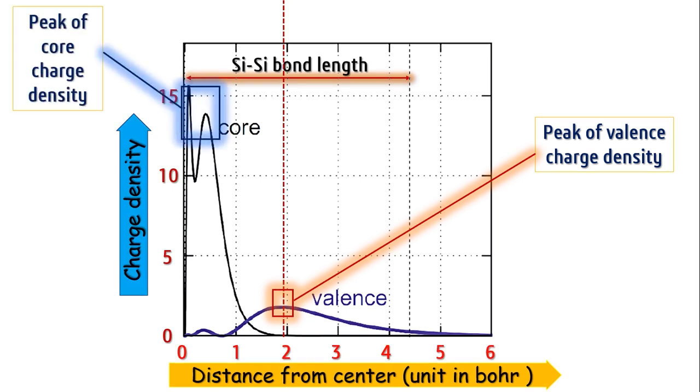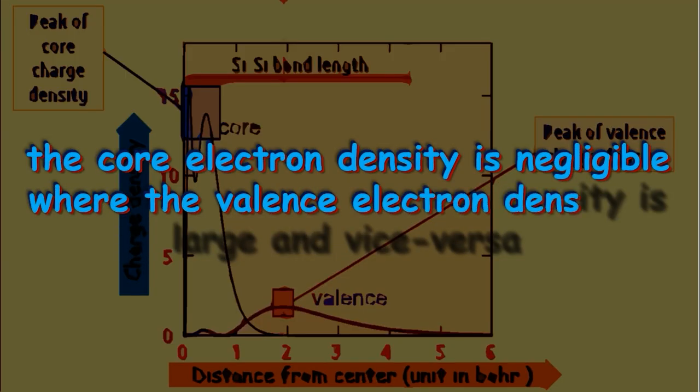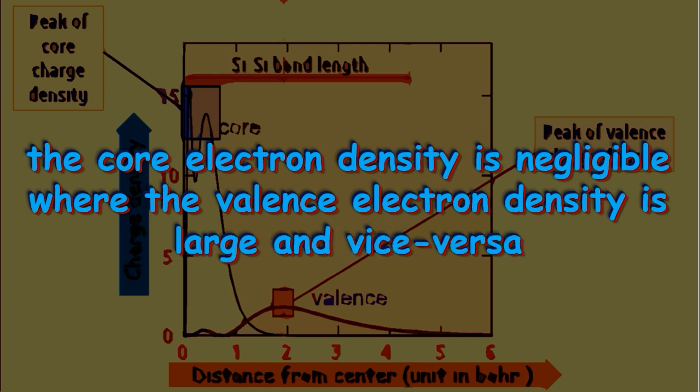Hence the moral is, even the charge densities peak at different points for different types of electrons. The core electron density is negligible where the valence electron density is large and vice versa. Therefore there is actually no reason that we cannot separate these two types of electrons.